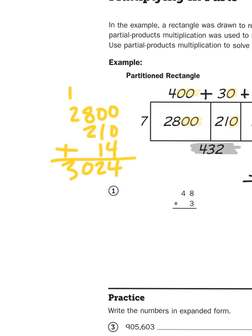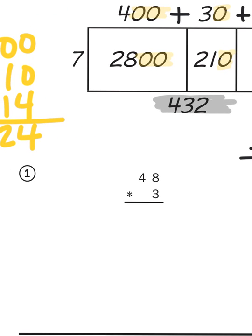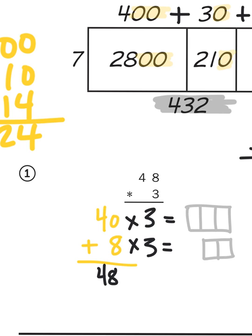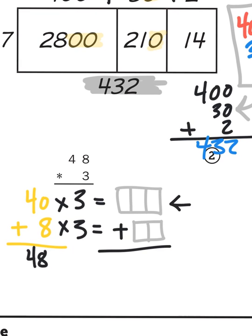So let me set up problem 1 for you. I'm not going to solve it, but I'll show you how to use the partial products approach. 48 times 3 — 48 is, of course, 4 tens and 8 ones. So I'm going to take 40 and multiply that by 3, and then take 8 and multiply that by 3. I'll take the product of 40 times 3 and add it to the product of 8 times 3, and that will give me my total product. Those are the partial products.